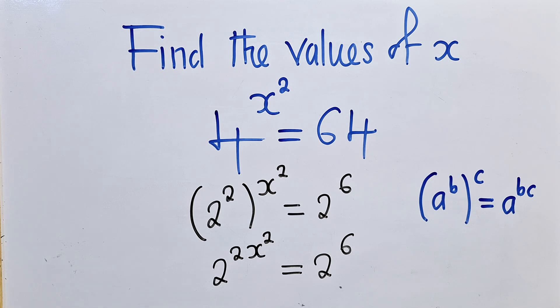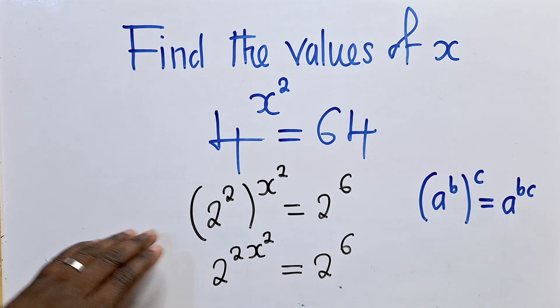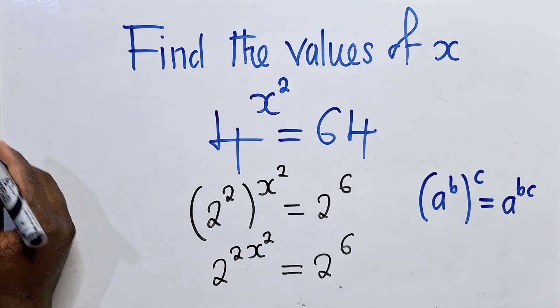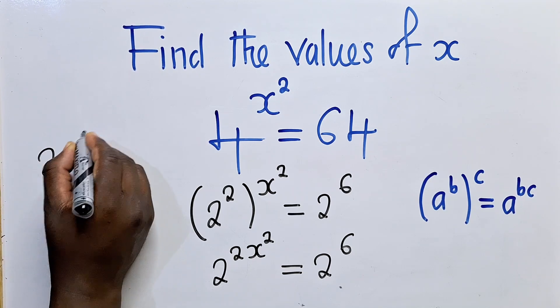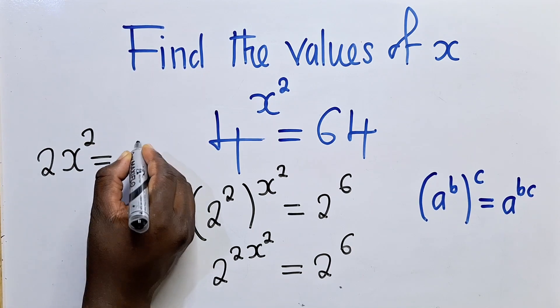Now, applying the property which I showed you first, the bases are equal to each other. We can equate the powers. So this will be 2x power 2 is equal to 6.